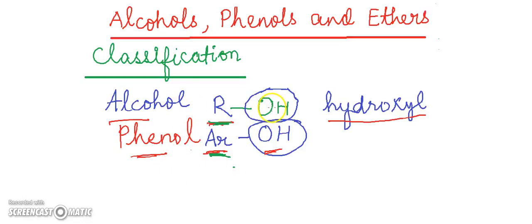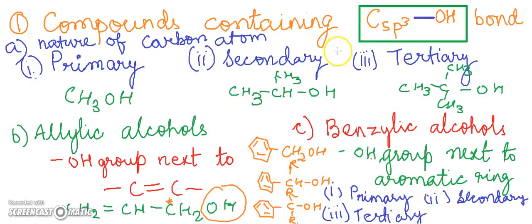In alcohols, the OH group — that is the hydroxyl group — is attached to an alkyl substituent, and in phenols the OH group is attached to an aryl substituent. Now we will learn about the classification of alcohols. Monohydric alcohols are classified according to the hybridization of the carbon atom to which the OH bond is attached.